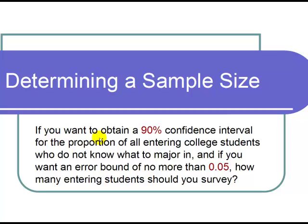If you want to obtain a 90% confidence interval for the proportion of all entering college students who do not know what to major in, and if you want an error bound of no more than 0.05, how many entering students should you survey?